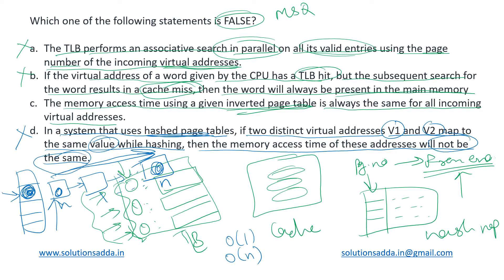Coming to option C, it was saying that memory access time using an inverted page table is always the same for all incoming virtual addresses. It is not even restricting to addresses mapping to the same entry — it makes the even broader claim that all of them have the same access time. Since it is a hash table with chained implementation, all addresses cannot have the same memory access time. Hence option C is the false statement, and this is the answer to the question.